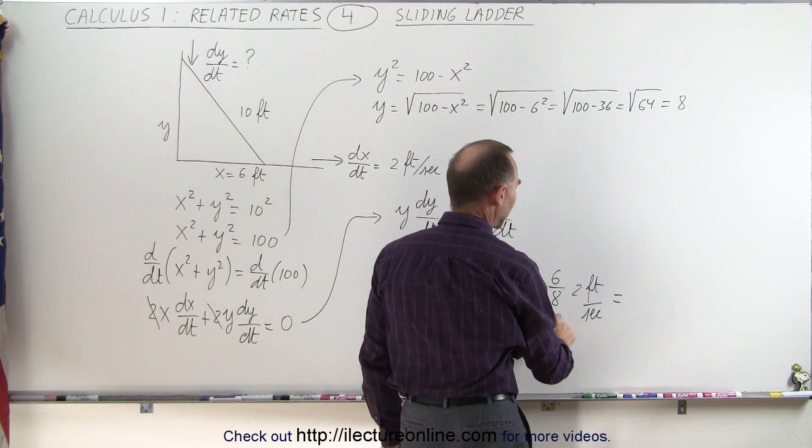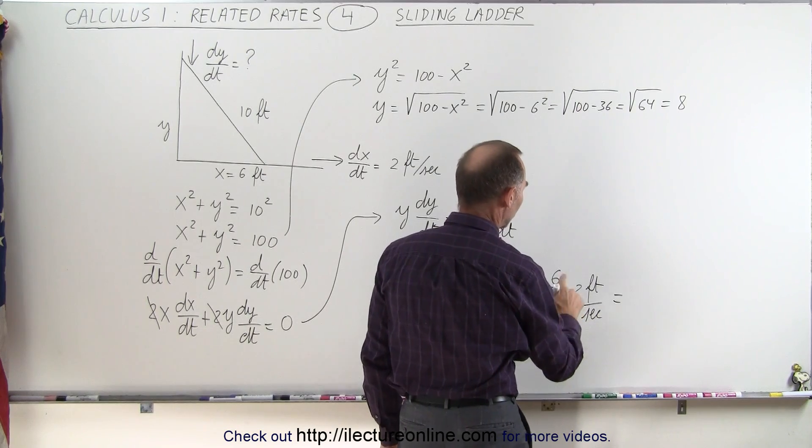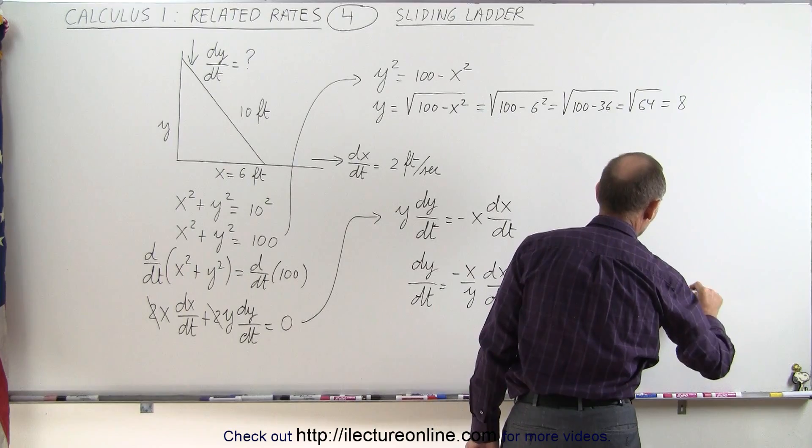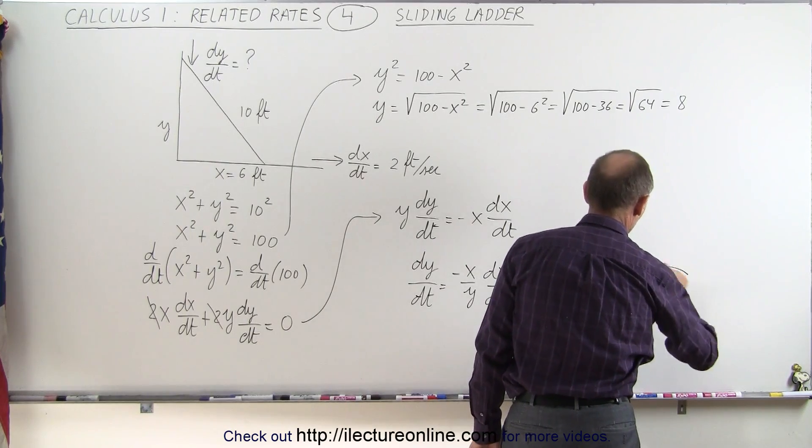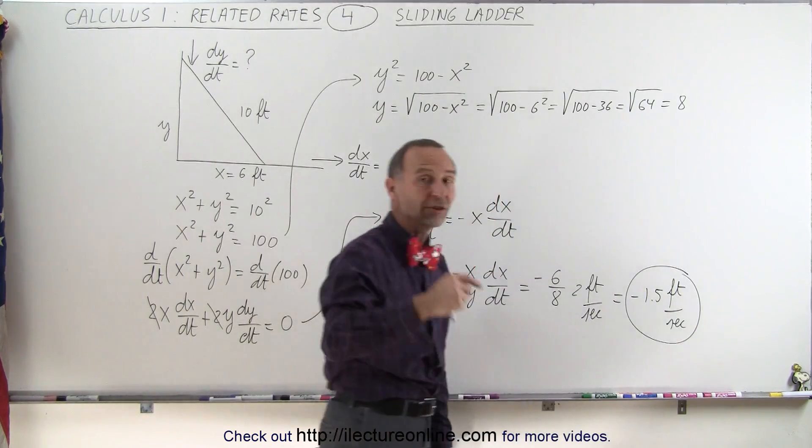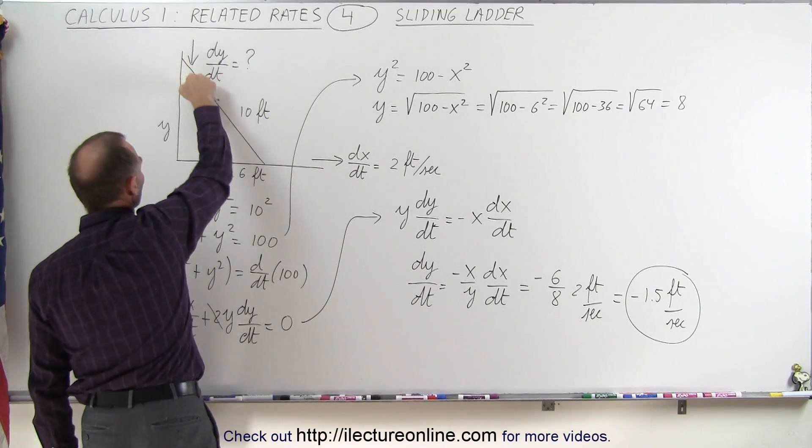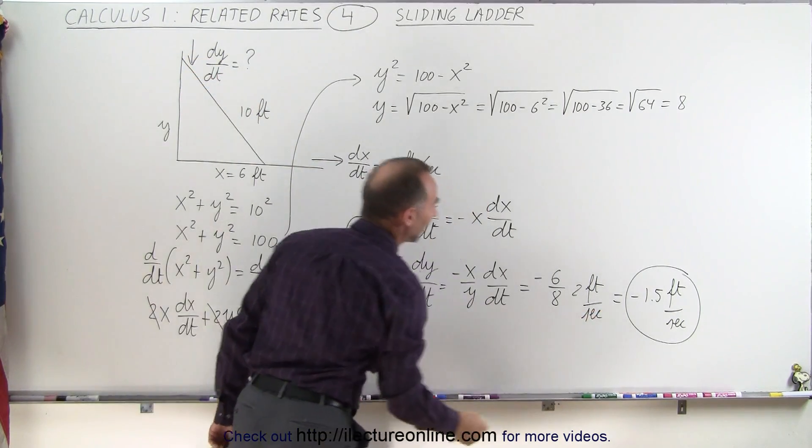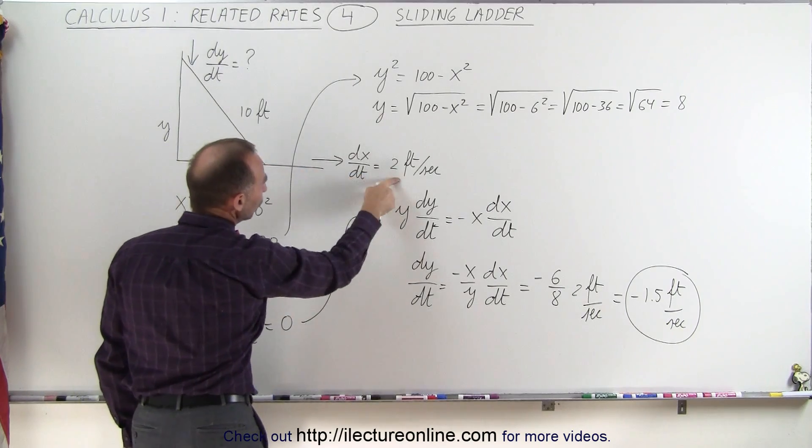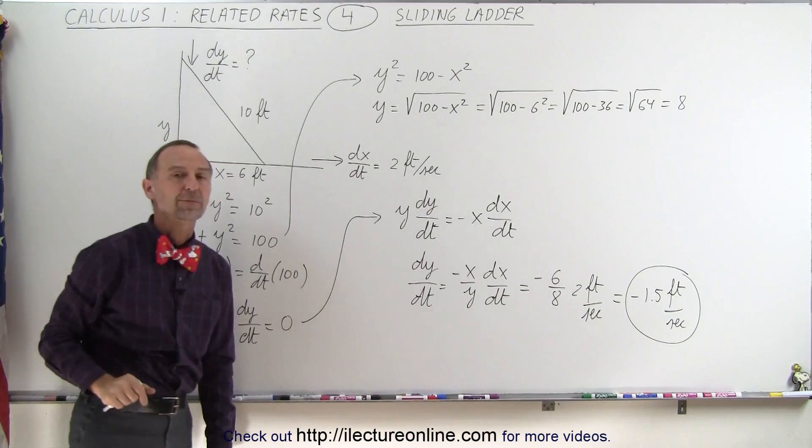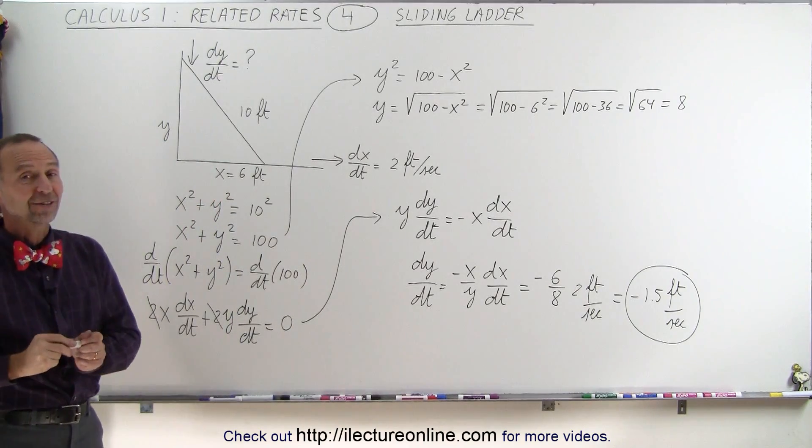So 2 divided by 8 is 1 divided by 4, 6 divided by 4 is minus 1.5 feet per second. The minus tells us that it's in a downward direction. As the ladder is sliding and the bottom slides out at 2 feet per second, the top is sliding down at 1.5 feet per second downward. And that's how it's done.